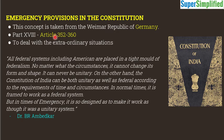There is a central list, there is a state list, and there is a concurrent list. These lists define which subject will be legislated upon by whom — which subjects fall under the state's purview and which fall under the center's purview. All these things are clearly defined in the constitution.